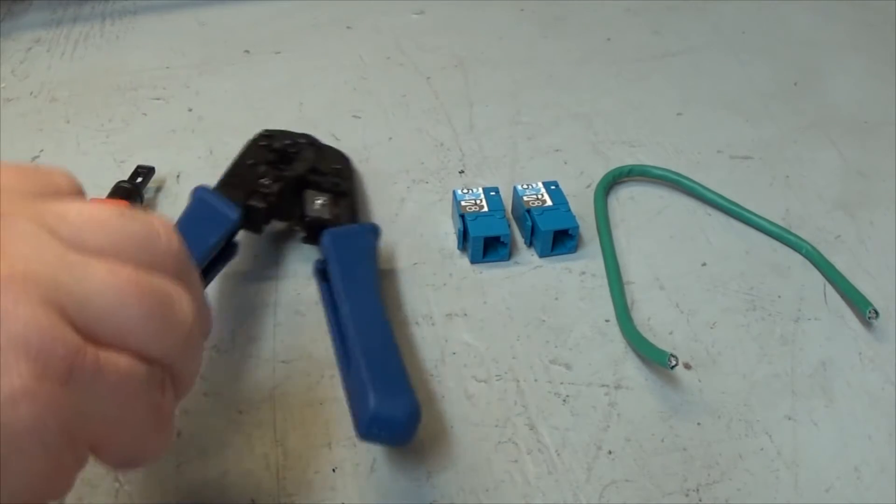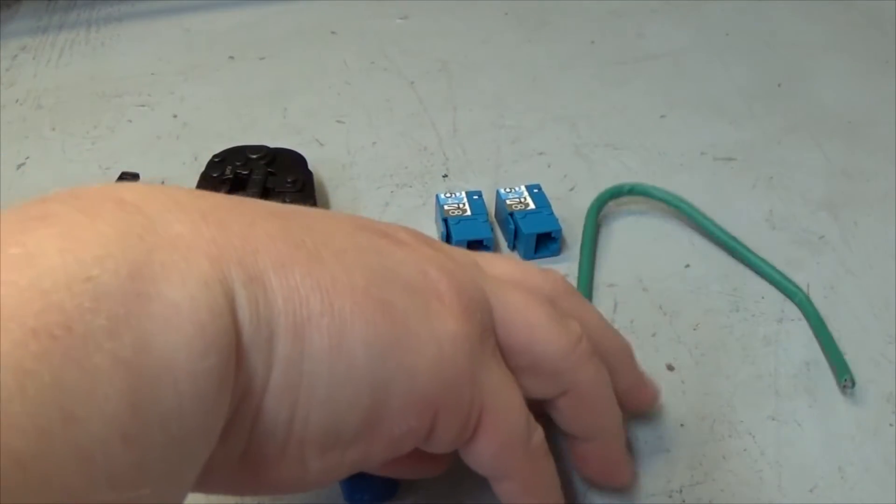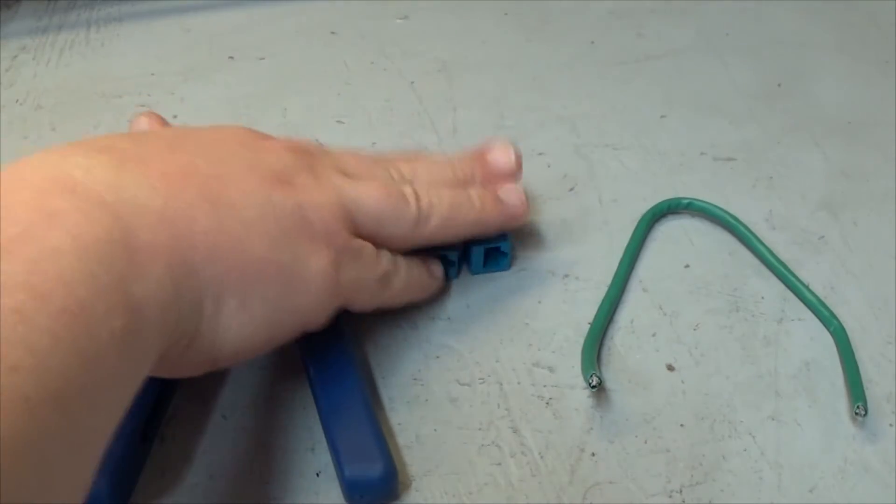So getting started, here's what I'm going to need. I got a punch down tool, wire stripper, just a little section of cable and then two modular jacks.